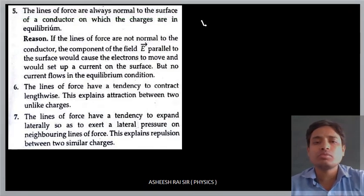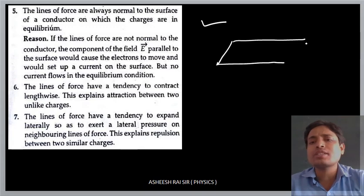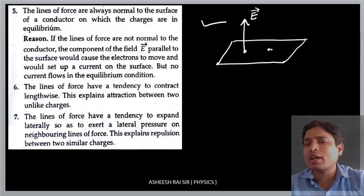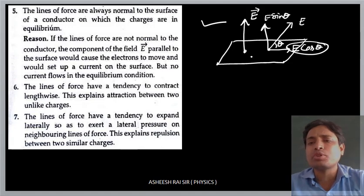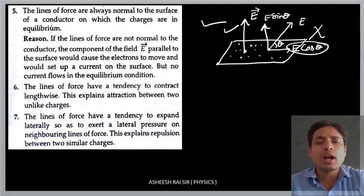Property number five: the lines of force are always normal to the surface of the conductor on which the charges are in equilibrium. Suppose there is any surface where the charges are in equilibrium — the electric field lines will always be normal to the surface. Why? Because if they were not normal and made some angle theta, we could resolve it into two components: E cos theta and E sin theta. Due to the E cos theta component, the electrons on the surface would start to move and create a current, but there is no current in equilibrium. That is why the field lines are always normal to the surface.